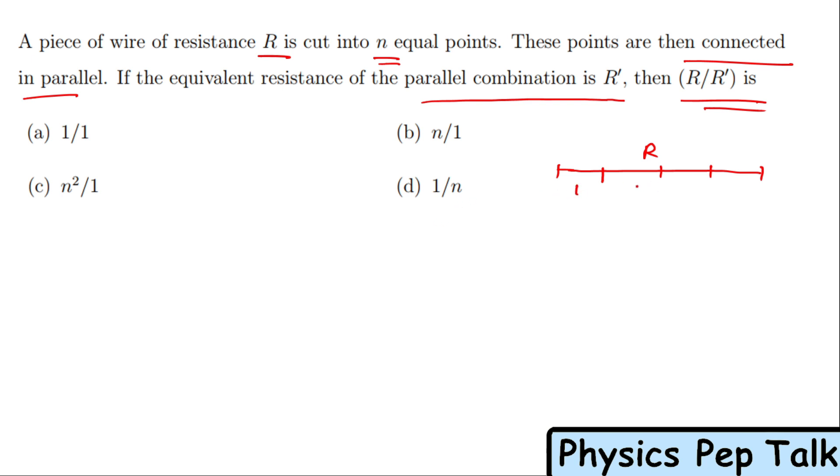So this is the first piece, second piece, third piece, fourth piece, and so on for n pieces. What will be the resistance of one piece? Total resistance of the wire is R, and we've made n pieces. So one piece will have resistance R/n. This is the resistance of each piece.